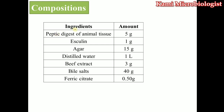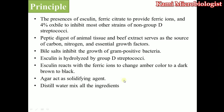Now let's see what type of ingredients are present in this media. This media contains peptide digest of animal tissue 5 grams, esculin 1 gram, agar 15 grams, distilled water 1 liter, beef extract 3 grams, bile salt 40 grams, and ferric iron 0.50 grams.